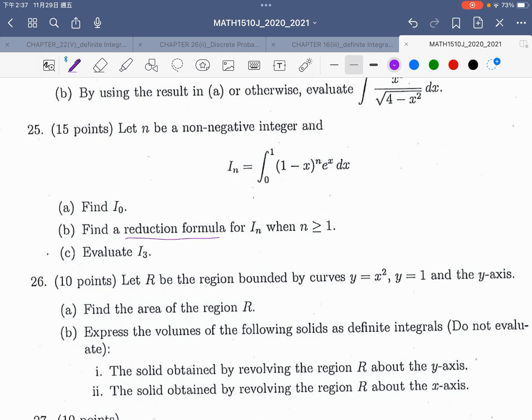First we have to find the value of I_0. I_0 means this n is equal to 0. Then this integration becomes the integral from 0 to 1 of e^x dx. It is e^x, aside the value of 0 and 1 into the function, aside e minus 1.